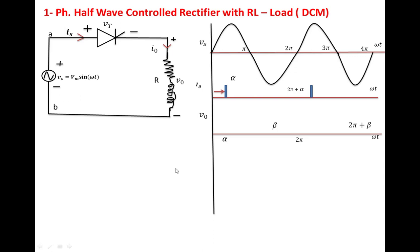The load voltage equals the source voltage up to π. After π, the SCR continues conducting due to the inductance, up to β. At β, the SCR turns off. Once the SCR is off, there is no connection between the load and supply, so the output voltage becomes zero.